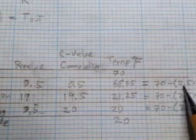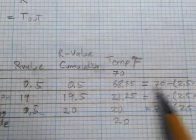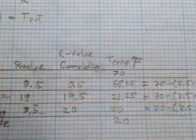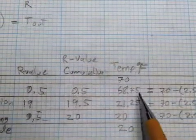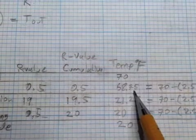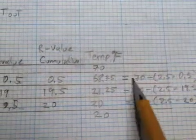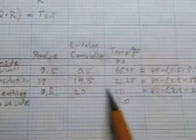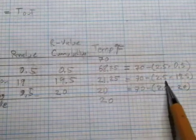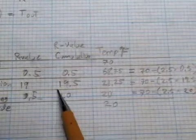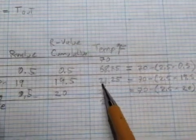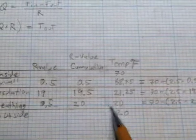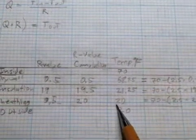For the drywall: 70 − (2.5 × 0.5) = 68.75°F on the outside of the drywall, which is also the inside face of the insulation. For the insulation: 70 − (2.5 × 19.5) = 21.25°F on the outside of the insulation, which is the inside face of the sheathing. For the sheathing: 70 − (2.5 × 20) = 20°F — not surprisingly, this matches our outside temperature exactly.